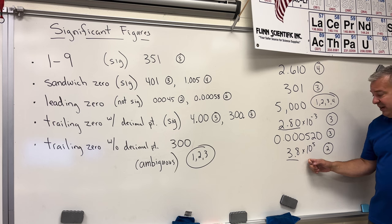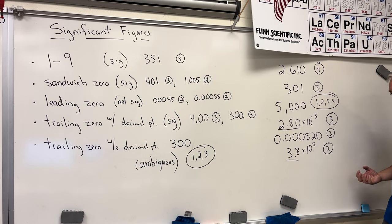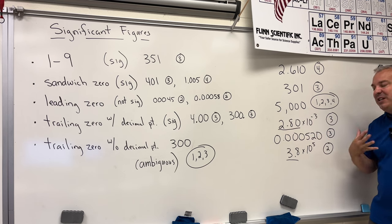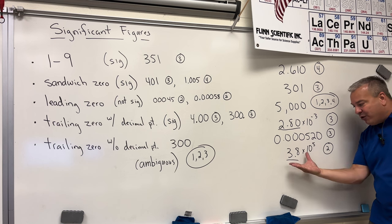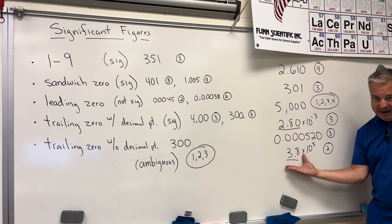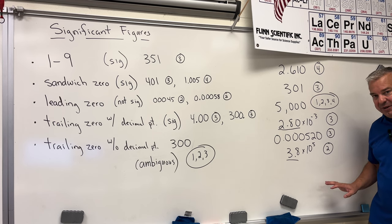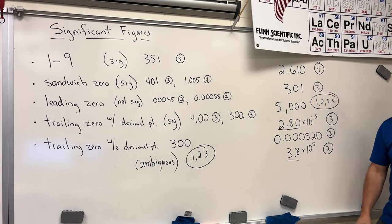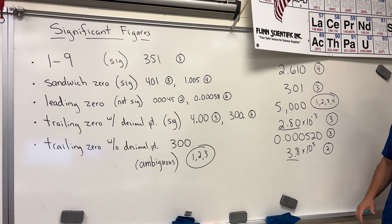What I occasionally see students do is take a number in scientific notation and convert it out of scientific notation — which gives the number ambiguity. The whole reason we use scientific notation is to remove ambiguity and let the reader know exactly how many sig figs we have. Don't take something out of scientific notation to create ambiguity; we use scientific notation precisely so we know exactly how many sig figs there are.